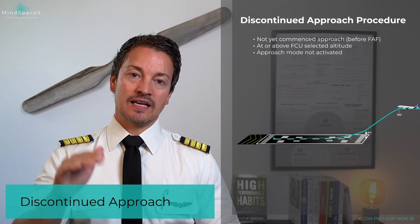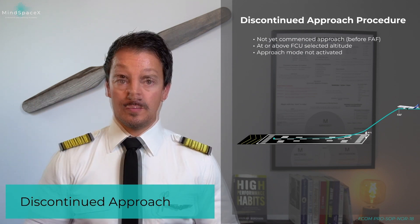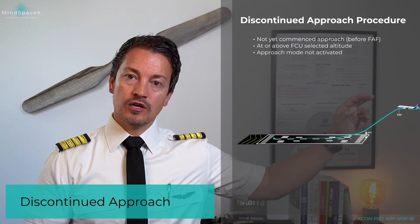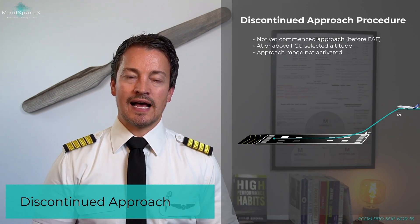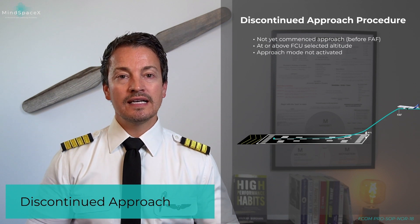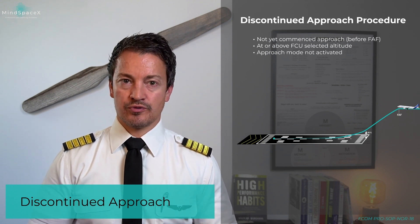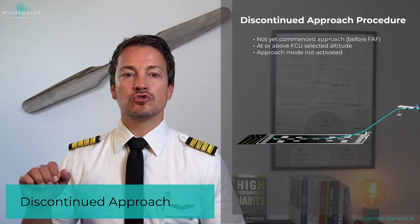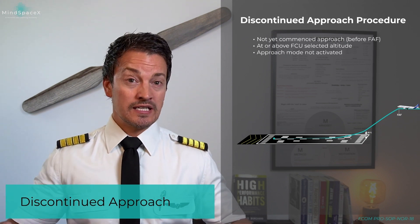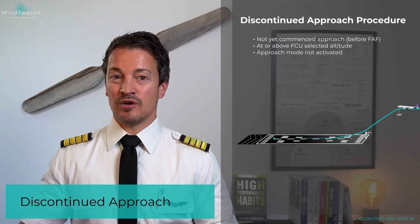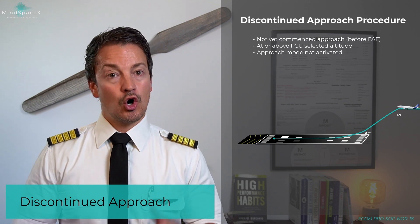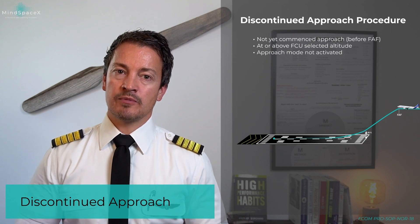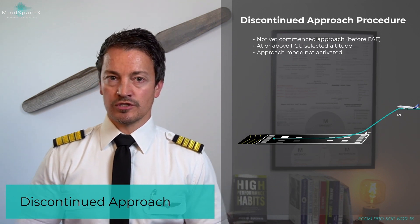But once it starts descending, it goes below that FCU selected altitude. If you need to abort an approach before going below that FCU selected altitude, you do not need to initiate a go-around procedure per se. You do not need to apply full power, you do not need to climb, and therefore do not necessarily want the excess power. All you have to do is push the approach button if you had armed it already and follow ATC instructions.